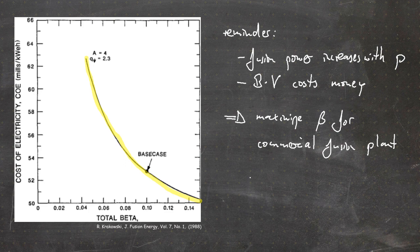That's it for today's video. We talked about ballooning instabilities — poloidally asymmetric modes. Applying the energy analysis, we introduced the normalized pressure gradient α and the shear s, obtaining s-α diagrams that define stable regions for each flux surface. From these we derived the stability beta limit and the Troyon limit for a circular cross-section plasma. Modern experiments achieve higher normalized beta through plasma shaping. We also noted that maximizing beta is economically crucial for a commercial fusion power plant.